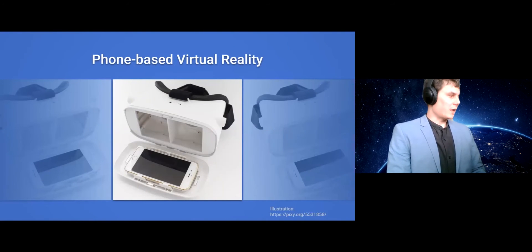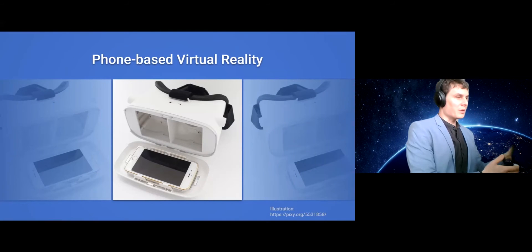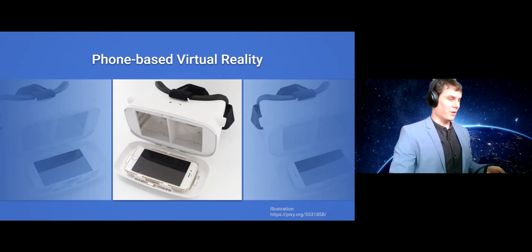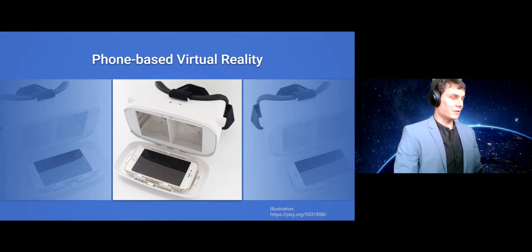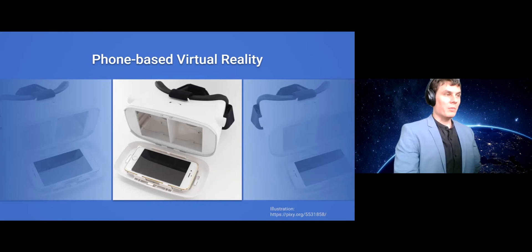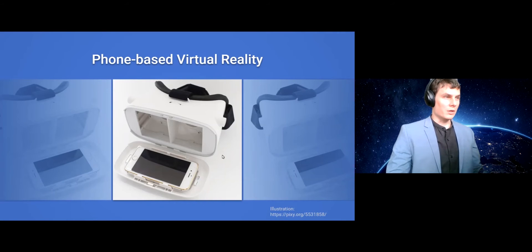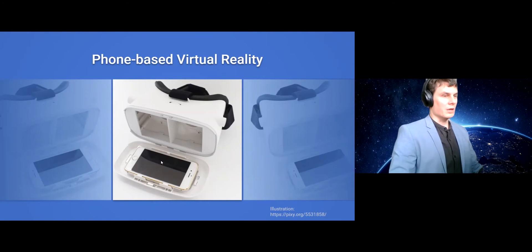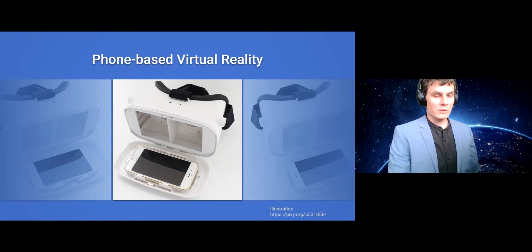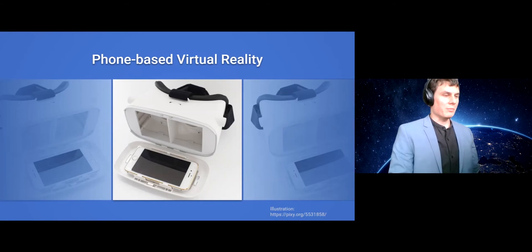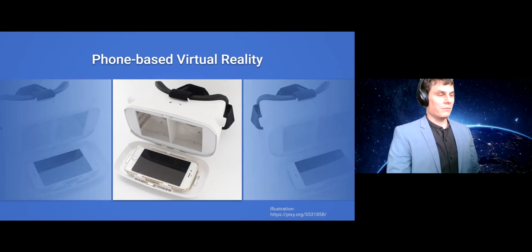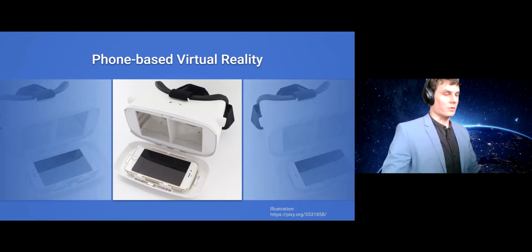There are different kinds of virtual reality devices available, and if you are not working with them, it might look like there are way too many to orient. But there are certain characteristics and ways to structure that. One of the most basic technologies is phone-based virtual reality that uses a smartphone with a screen, which you can insert into a plastic or even paper headset. The software will split the screen in two and display a stereo image.